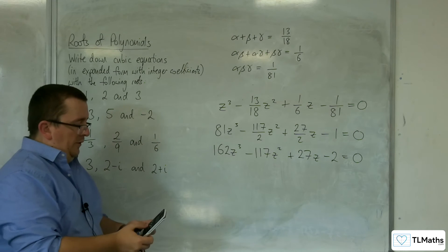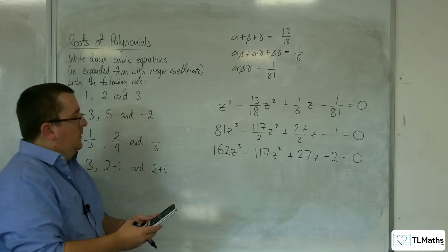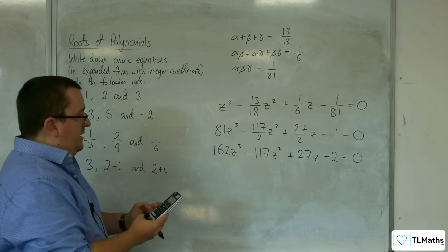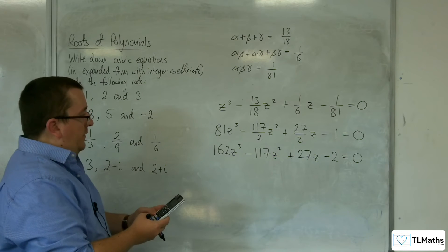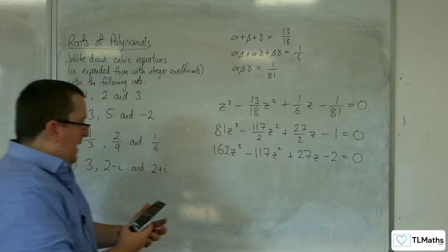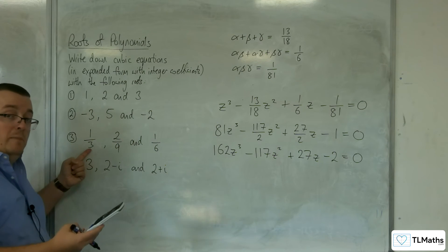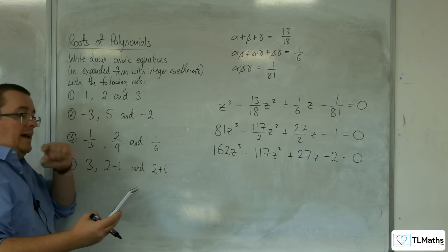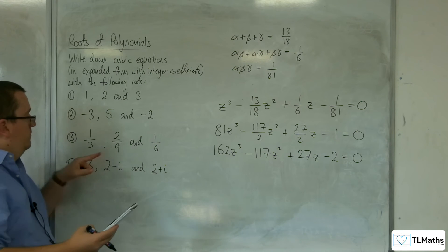So, if we put that into our cubic solver, just to check, 162 minus 117, 27 and minus 2, we get the 1/3. So it's giving me it as 0.3 recurring, so 1/3.